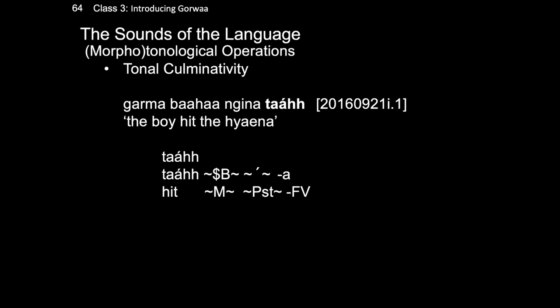Take, for example, the tone of the verb tah, meaning hit. In the example garma baha nina tah, tah has a high tone as its basic realization, but the morpheme that marks it for a masculine subject takes away that high tone. Next, the morpheme indicating past tense — again a high tone — restores that high tone. So at the end, the structure is ultimately realized with rising tone: tah.